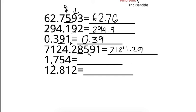Now let's go through these other ones. The number in the hundredths place is 5. 4 is less than 5, so the number stays the same, 1.75. The number is 1. 2 is less than 5, so the number becomes 12.81.